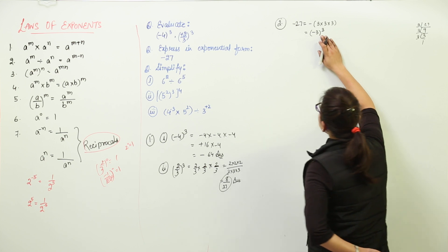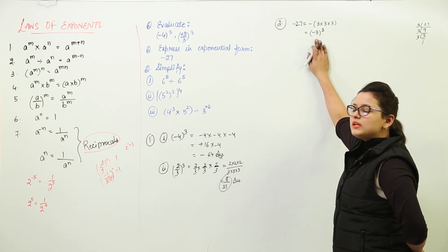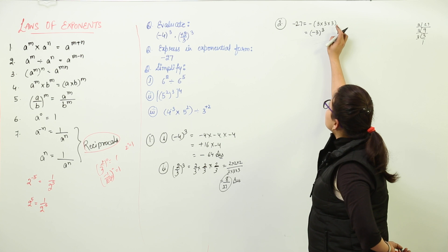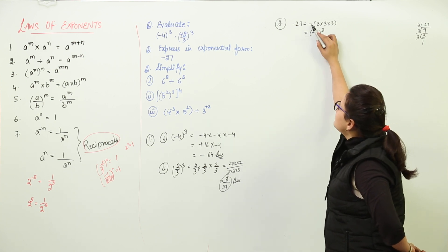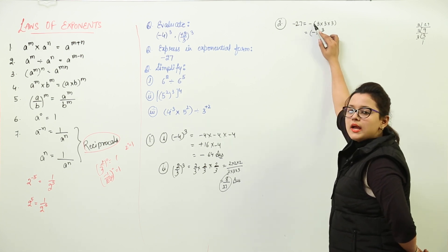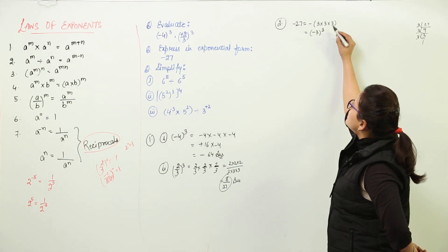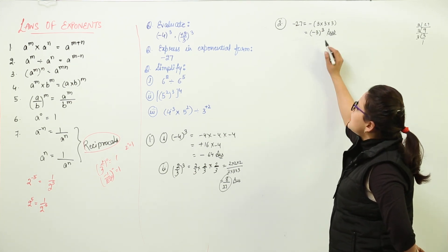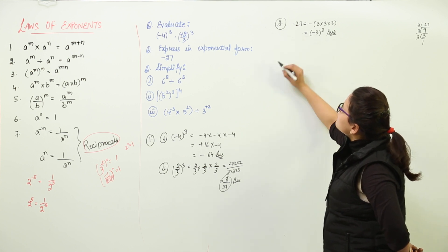Even if you check minus 3 multiplied with itself 3 times, you would get the sign as negative only. That is why earlier the negative sign was written separately, and now it has been included inside. So we get minus 3 raised to power 3 as the exponential form for minus 27.